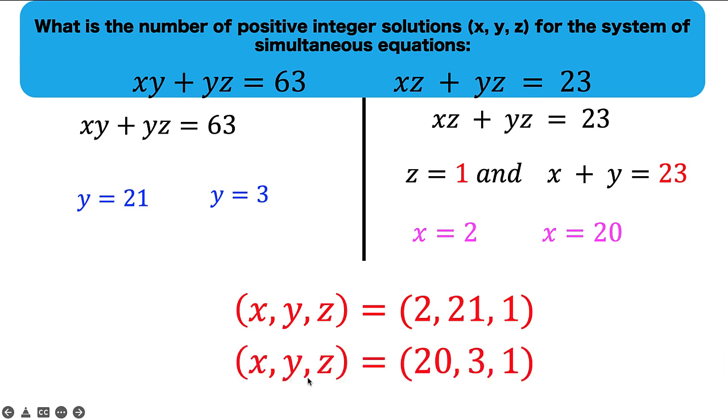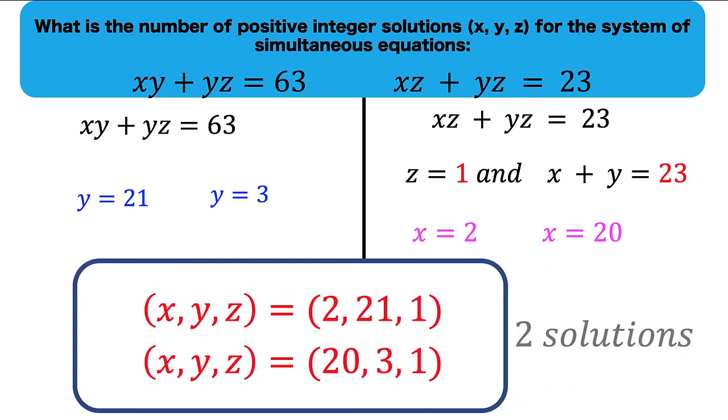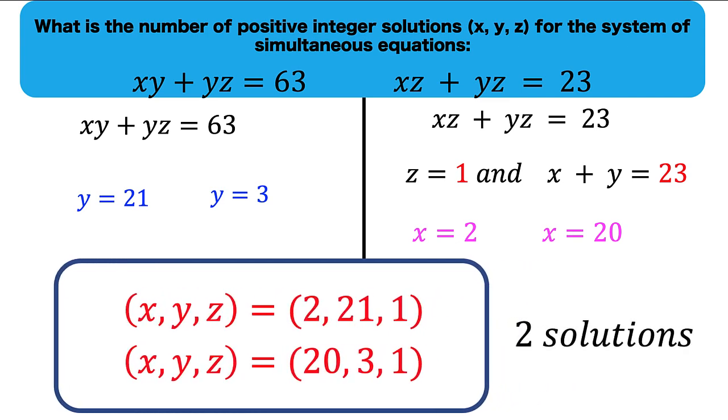Or x, y, z equals 20 for x, 3 for y, and 1 for z. And so we have two solutions for these Diophantine equations. So the answer is there are two solutions.